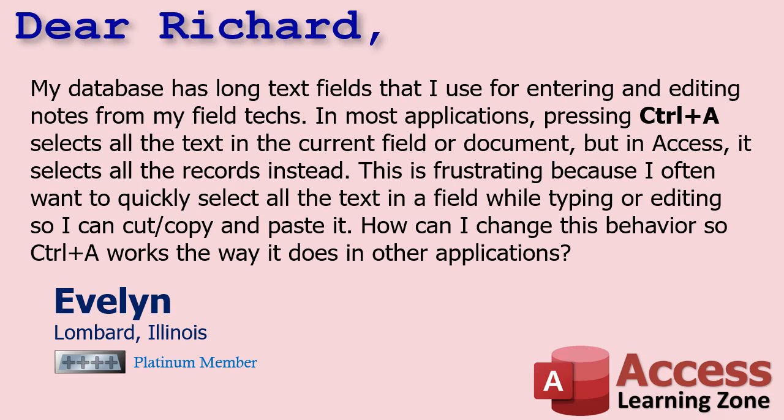Evelyn says: my database has long text fields that I use for entering and editing notes from my field text. In most applications, pressing Control-A selects all the text in the current field or document, but in Access, it selects all the records instead. This is frustrating because I often want to quickly select all the text in a field while typing or editing so I can cut, copy, or paste it. How can I change this behavior so Control-A works the way it does in other applications? Yeah, that can be annoying — I've run into this myself.